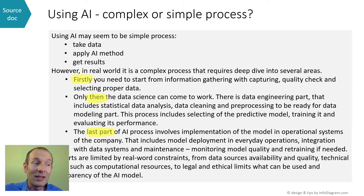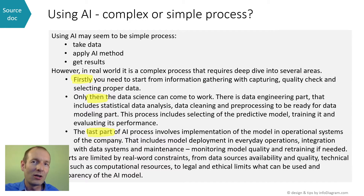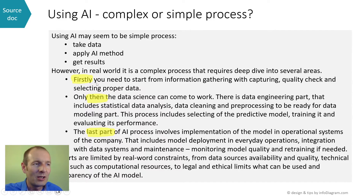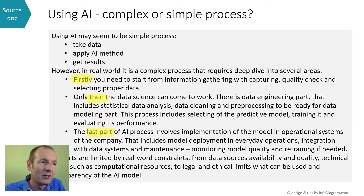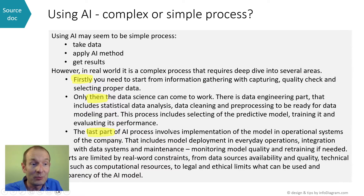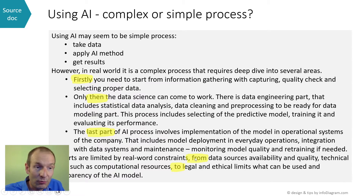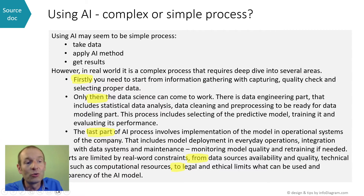Looking at the text, we can already see some content which can indicate what kind of visualization to use. For example, when you see words like 'first,' 'then,' 'last' — in a bullet point or plain text — this should already indicate that there is a kind of process or procedure with steps. Similarly, bullet points may indicate a list of items, sometimes hidden, sometimes visible. A hidden list can also appear as constraints or data sources mentioned within the text.